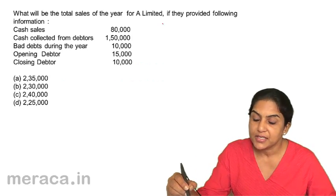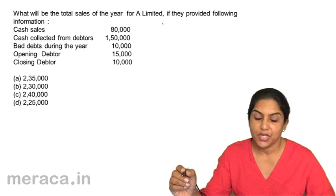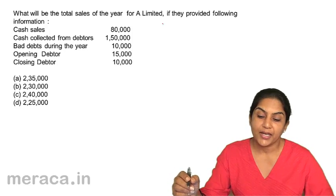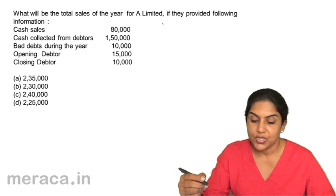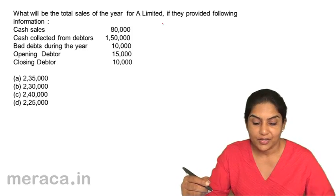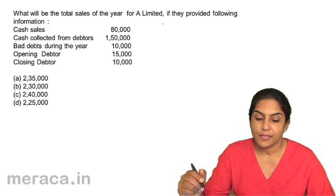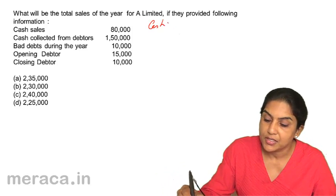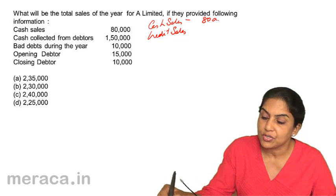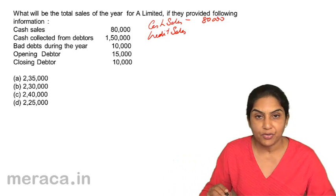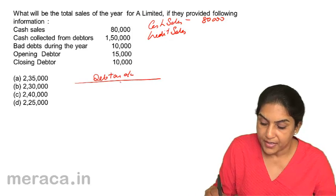What will be the total sales of the year for A Limited given the following information? Cash sales: 80,000. Cash collected from debtors: 1,50,000. Bad debts during the year: 10,000. Opening debtors: 15,000. Closing debtors: 10,000. Is it 2,35,000 / 2,30,000 / 2,40,000 / or 2,25,000? Total sales will be cash sales plus credit sales. Cash sales is 80,000. To find credit sales, we prepare a debtor's account.